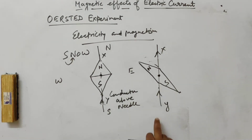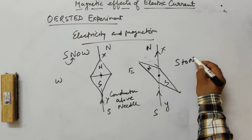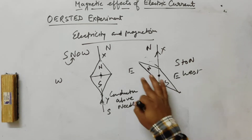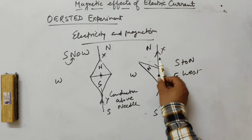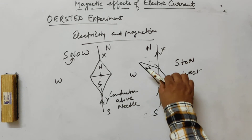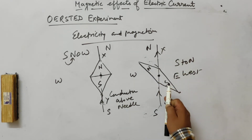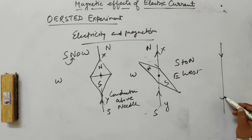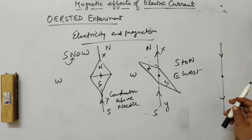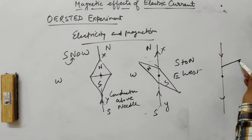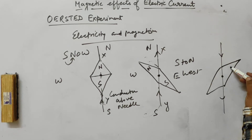If the current is flowing south to north, deflection will be towards west. If I change the direction of current to downward, then the deflection will be in the opposite direction — towards east instead of west.